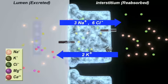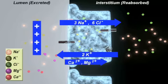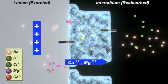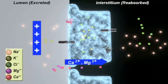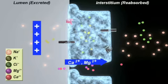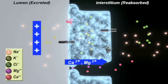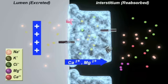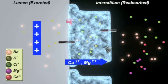Because of the secretion of potassium, a positive voltage is generated in the lumen, resulting in reabsorption of positively charged ions through the paracellular junction.